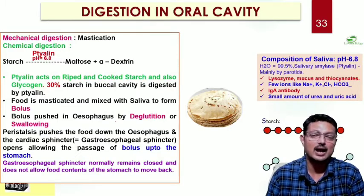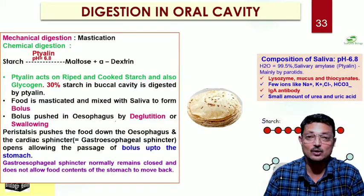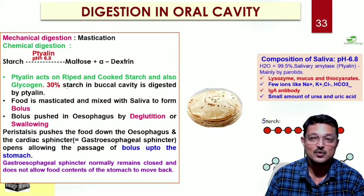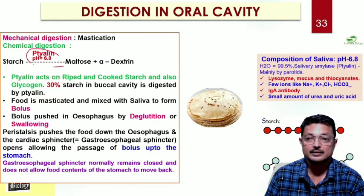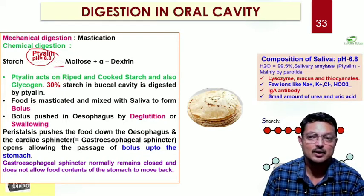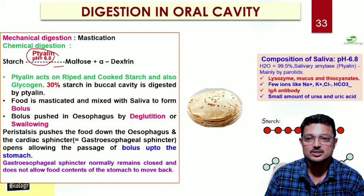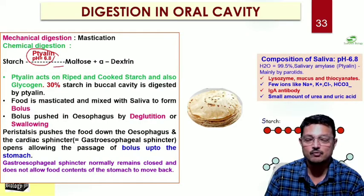Now let us have a look at how digestion takes place in the oral cavity. When you break down food particles into smaller parts, enzymes can work more easily. After mastication, major digestion of starch takes place in the buccal cavity. The enzyme responsible is ptyalin, which works at acidic pH and converts starch into maltose and dextrins. Ptyalin acts on cooked starch. After being mixed with saliva, the food is formed into a food cord called the bolus.